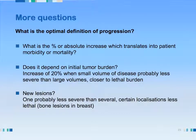Here are more questions: what is the optimal definition of progression? Is it a percent increase or an absolute increase? When does this increase translate into patient morbidity or mortality? Does it depend on initial tumor burden? If you're using a percent increase with a small volume of disease, it's probably less severe than with a large initial volume. How about new lesions? One new lesion is probably less severe than several new lesions. There might also be certain localizations which are less lethal.